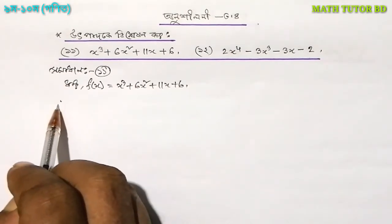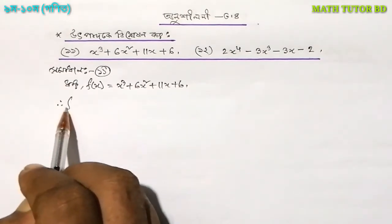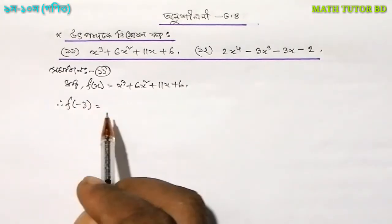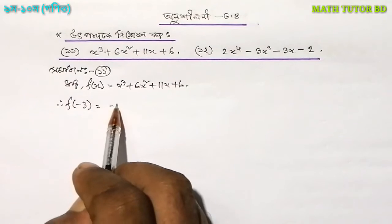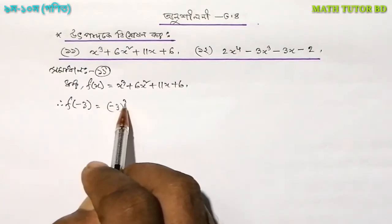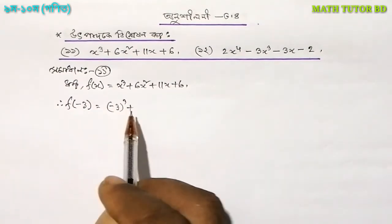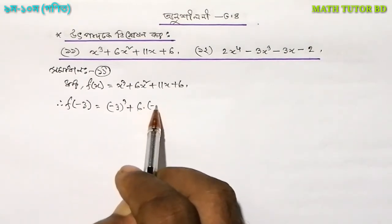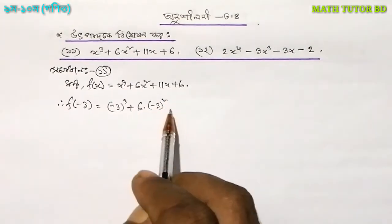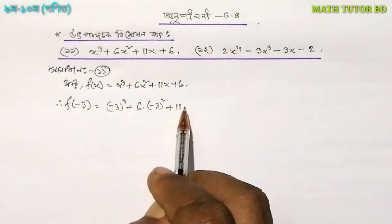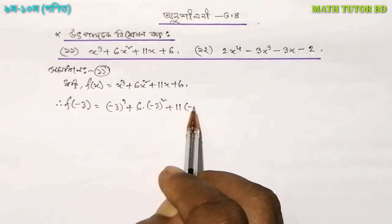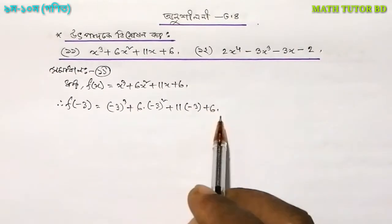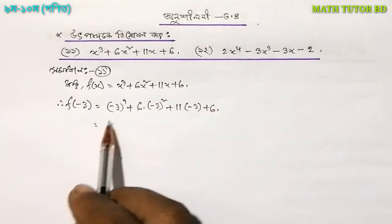The function of x is equal to minus 3x³ plus 6x². Here is the function: x² minus 3x³ plus 6x³ plus 6x².